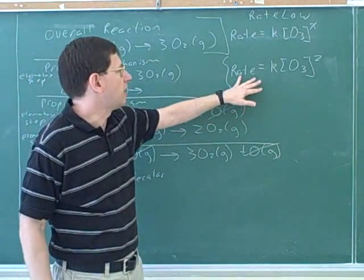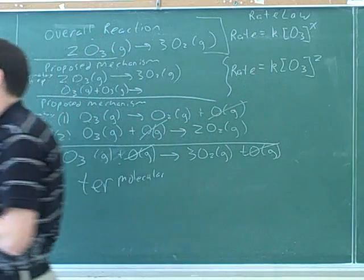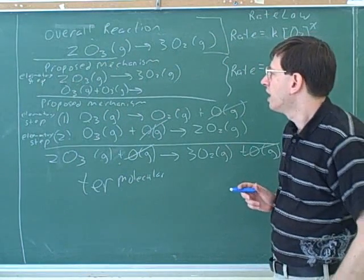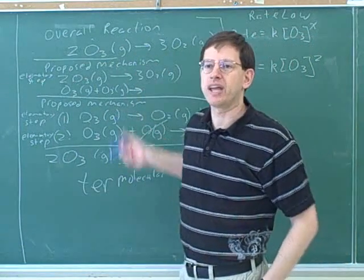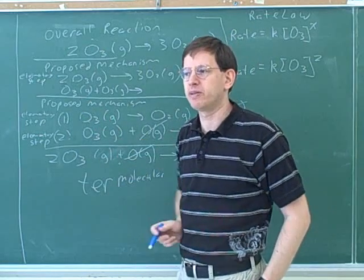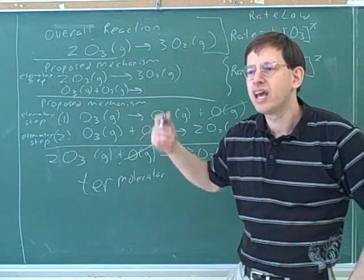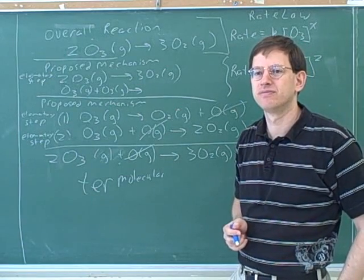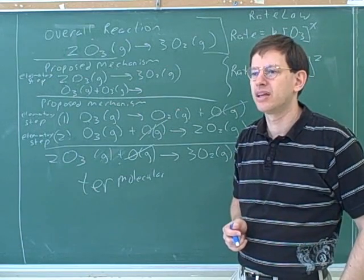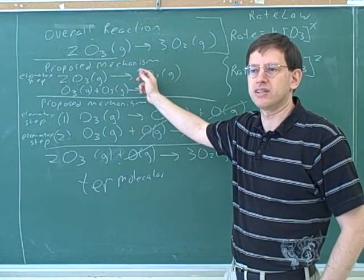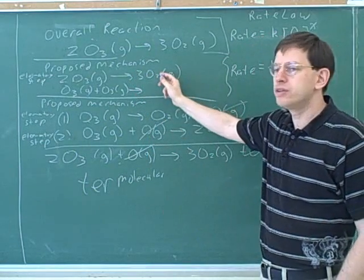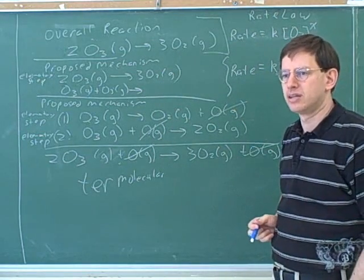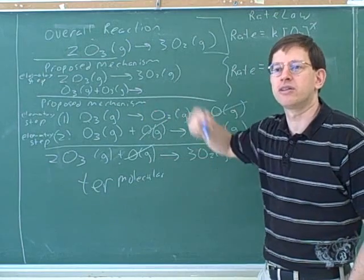So this would be our proposed rate law in this case. One of the things then is we were asking, how can you figure out what mechanism is right or plausible because we can't actually see things happening on the molecular level? How can you tell what is the correct mechanism for a reaction? Well, how can we test if this was the correct mechanism? We know if this were the correct mechanism, this would be the correct rate law. So by finding out what the exponent is?